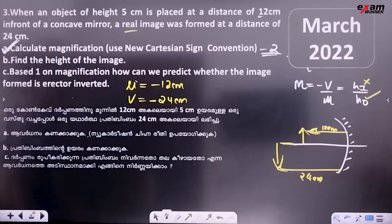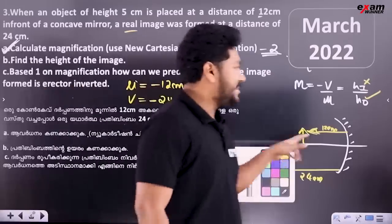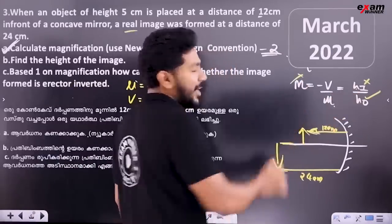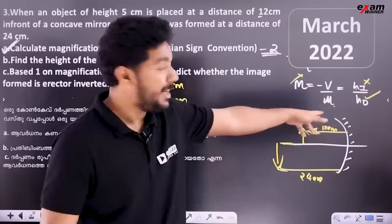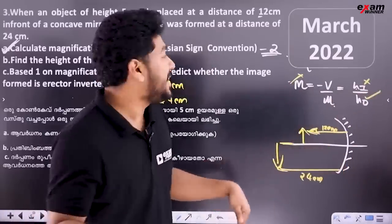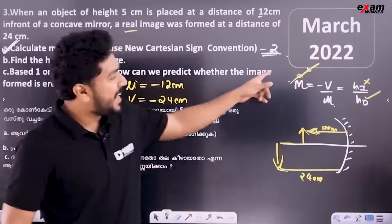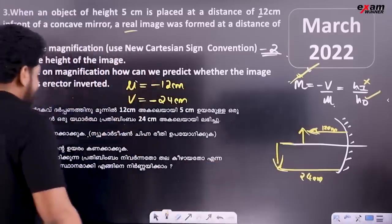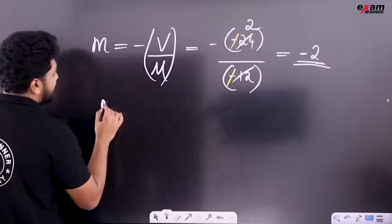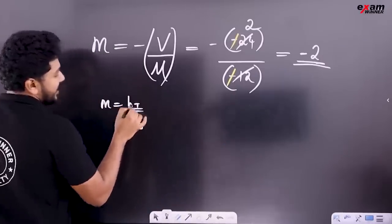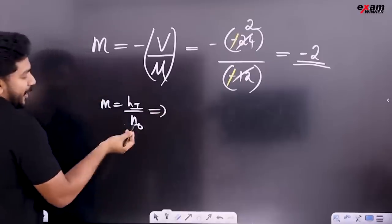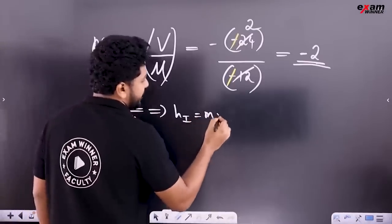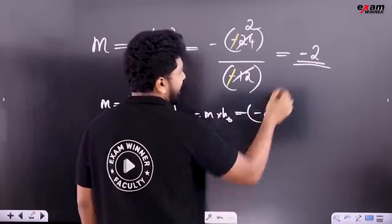Find the height of the image. We use magnification minus 2. M is equal to h-I by h-O. We should find height of the image. h-I is equal to M into h-O. Magnification is minus 2, then substitute minus 2.